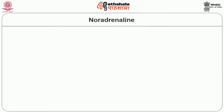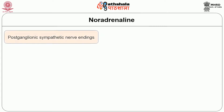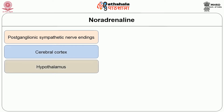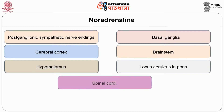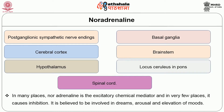Next, let us see about noradrenaline. Noradrenaline is a neurotransmitter in adrenergic nerve fibers. It is released from postganglionic sympathetic nerve endings, cerebral cortex, hypothalamus, basal ganglia, brainstem, locus coeruleus, and spinal cord. In many places, noradrenaline is the excitatory chemical mediator, though in very few places it causes inhibition. It is believed to be involved in dreams, arousal, and elevation of moods.